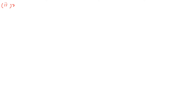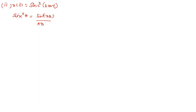Now for the second question, x(t) = sinc²(200t). We can write sinc²(θ) = sin²(πθ) / (πθ)². So x(t) = sin²(200πt) / (200πt)².